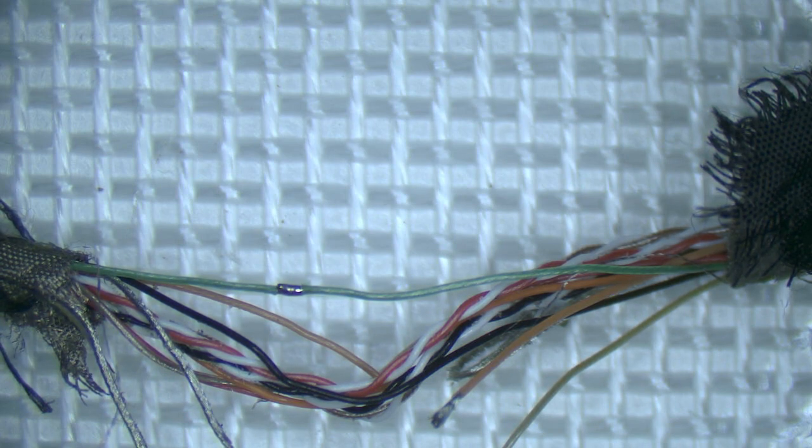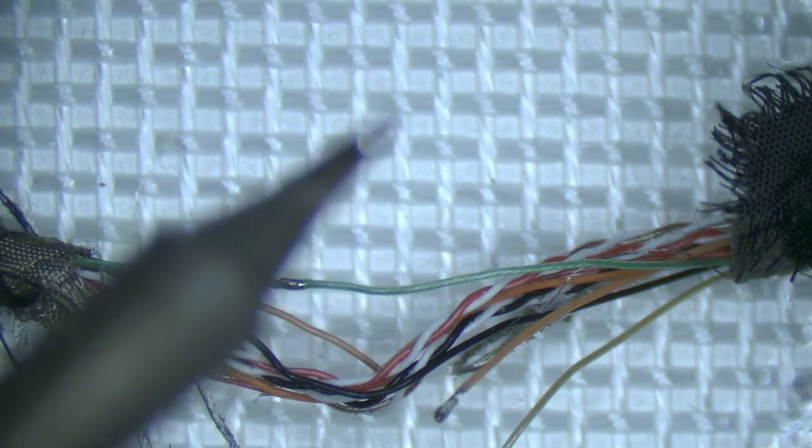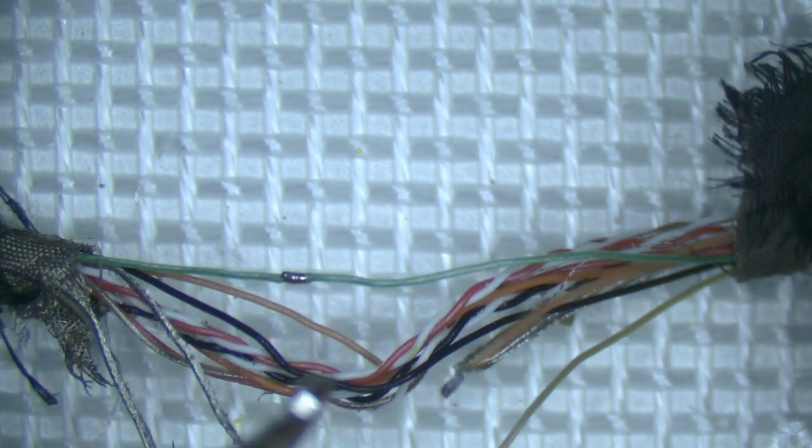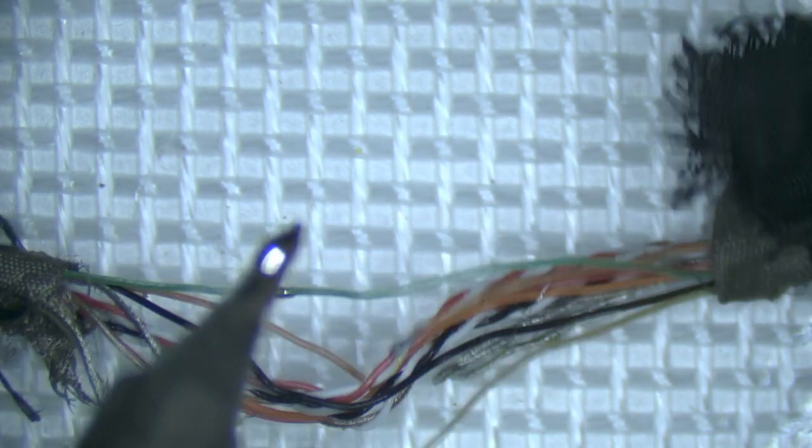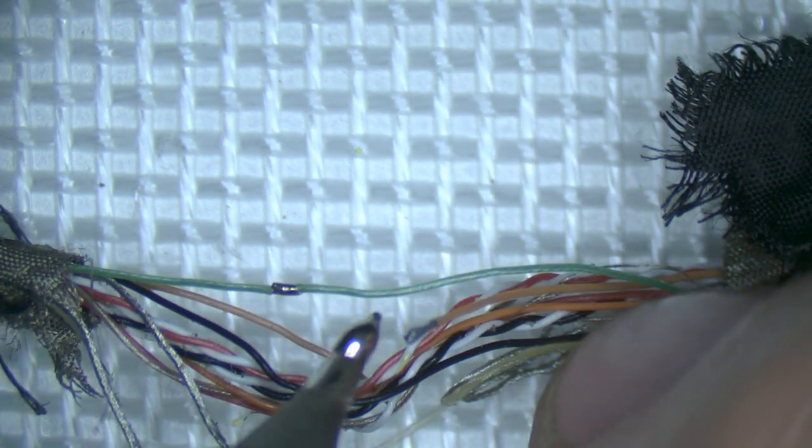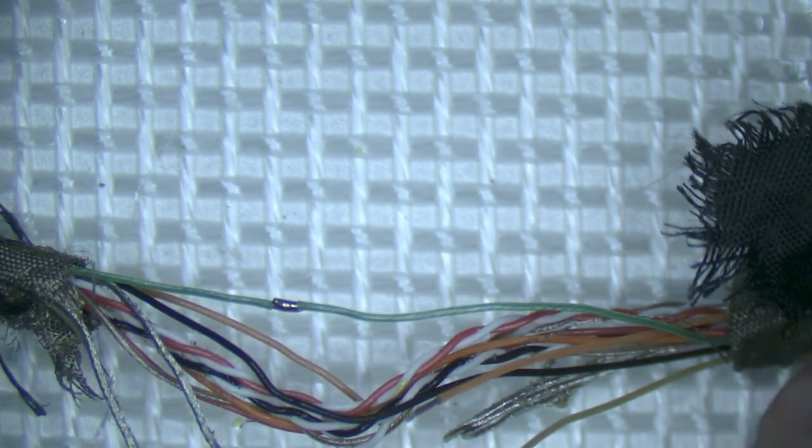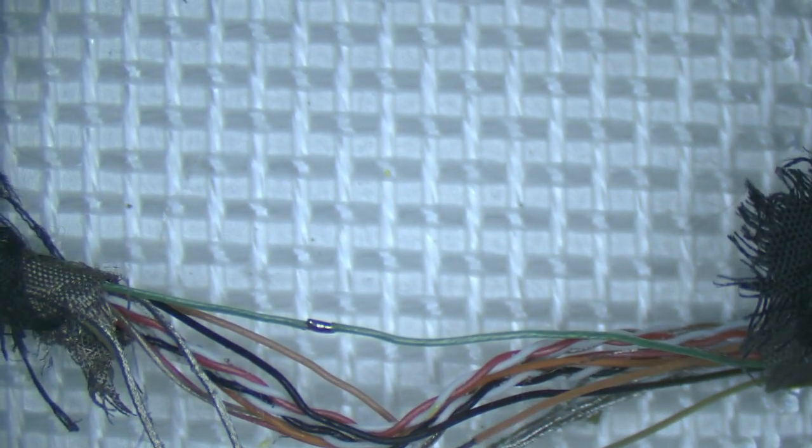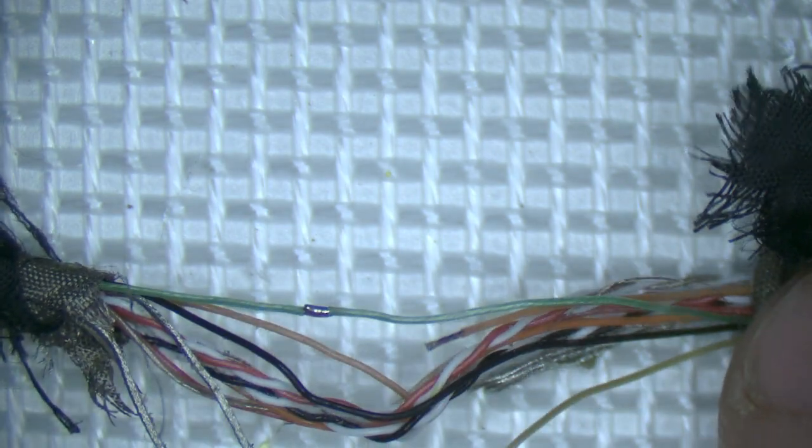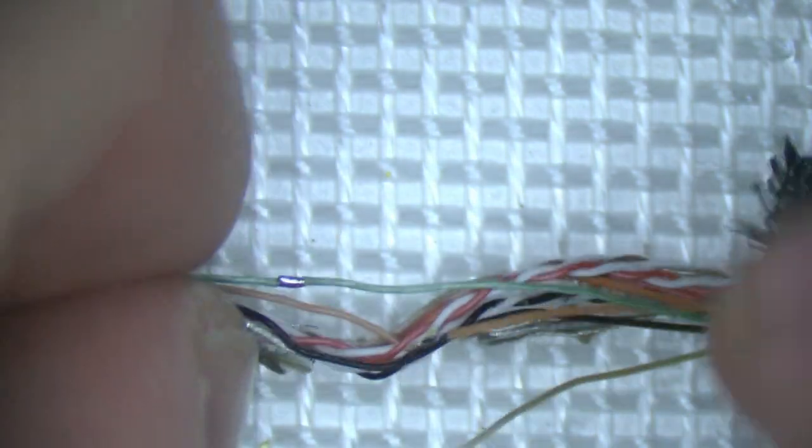Okay, just put some solder on my tip. Since we've got flux on the wire, it's just going to do it for us. There we go. That's good. Now we find its companion on the other side.